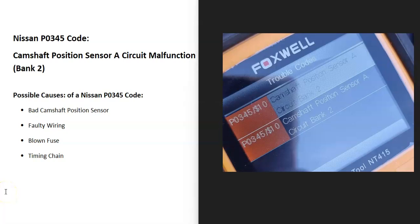Today I'm talking about a Nissan with the P0345 code, what it is and how to fix it. The Nissan P0345 code is a camshaft position sensor A circuit malfunction bank 2.